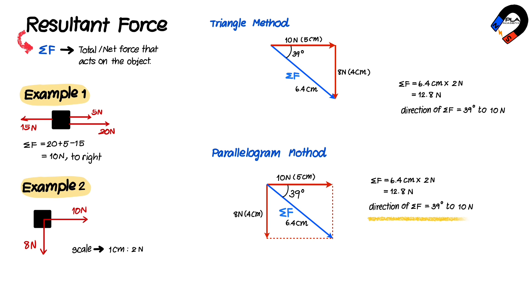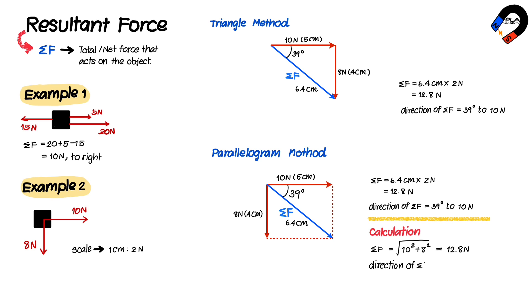We can also calculate the magnitude of the resultant force using the Pythagorean theorem and the direction using the tangent ratio. The magnitude is the square root of 10² plus 8², which equals 12.8 Newtons. The direction is tan⁻¹(8/10), which equals 39 degrees to the 10 Newtons force.